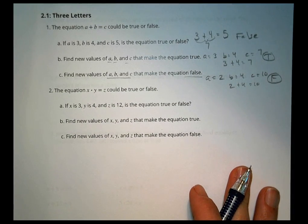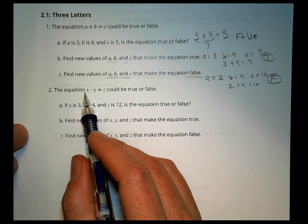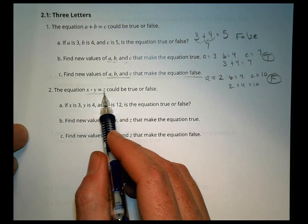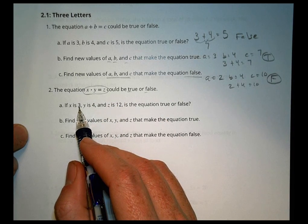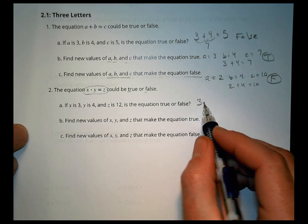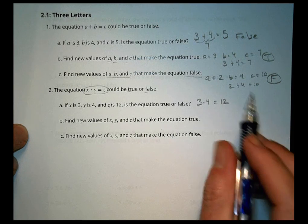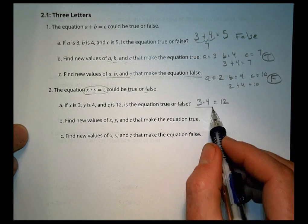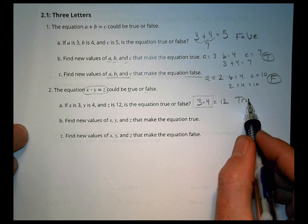We could do the same thing with multiplication problems as well. It says that this equation, x times y equals z, could be true or false. If x is 3, y is 4, z is 12, that becomes 3 times 4 equals 12. Is that true or false? Well, 3 times 4 is actually 12, so that's going to be a true statement.